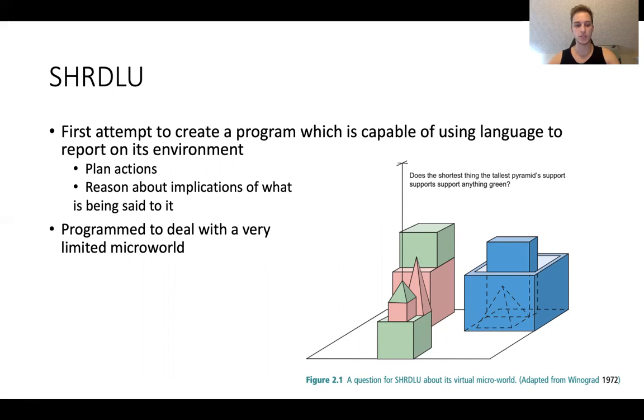SHRDLU consists of, as you can see from Figure 2.1, colored blocks, colored pyramids, and a box. They're all different colors, different shapes, different sizes, and they're all oriented on this screen in different ways. They can be moved around and SHRDLU is capable of many things, including picking up items, moving them and putting them into the box, and answering statements or questions based on what is going on in its environment. Very sophisticated, but again, it's limited to this microworld.